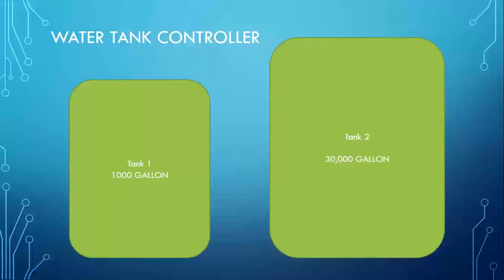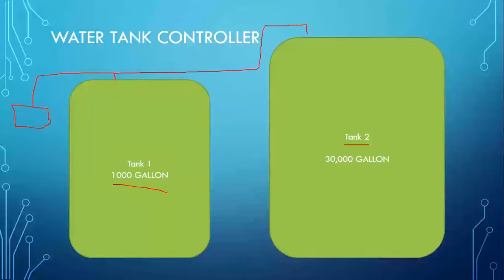Let's say in your house or apartment you have two tanks. Tank number one has a 30,000 gallon capacity and tank two is a smaller one with 1,000 gallon capacity. If you have one pump supplying water to both tanks, this smaller tank will fill fast every time and overflow, wasting water. So we will put an electronic valve here.